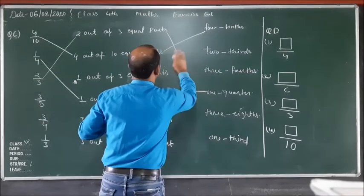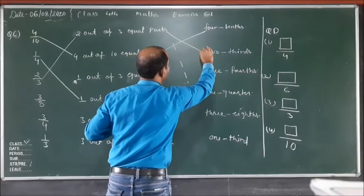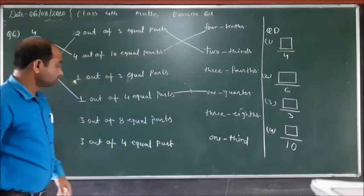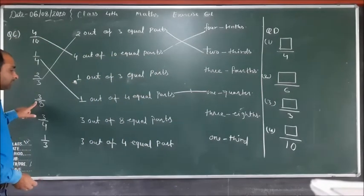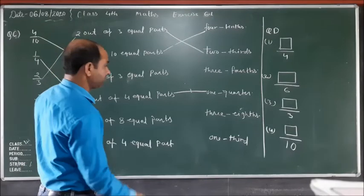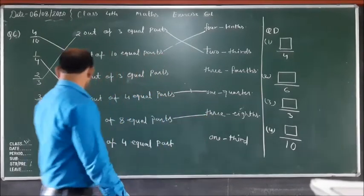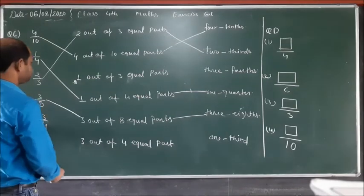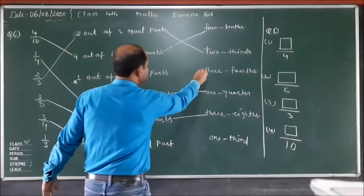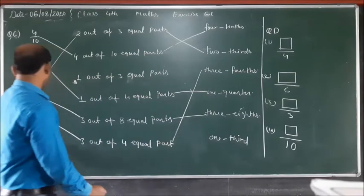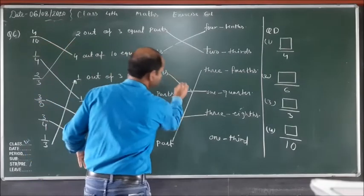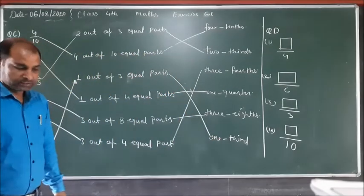Two-thirds is matched here. For three upon eight: three out of eight equal parts, so 'three-eighths.' Then three upon four: three out of four equal parts is 'three-fourths.' And one upon three is 'one-third.' Question C is now completed.